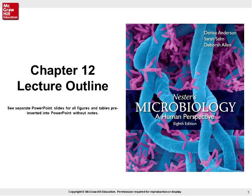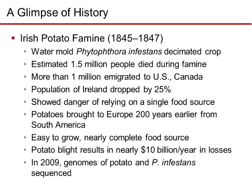We're going to look at all those variations in the different types of organisms with eukaryotic cellular structure. A glimpse of history: the Irish Potato Famine of 1845-1847 caused a large influx of Irish immigrants into the United States. The water mold Phytophthora infested and decimated the crop, making large potatoes very small. An estimated 1.5 million died from starvation, and more than a million immigrated to the U.S. and Canada. The population of Ireland dropped by one-fourth, 25%, showing the danger of relying on a single food source. Potatoes were the mainstay of most diets for the poor Irish in Ireland.